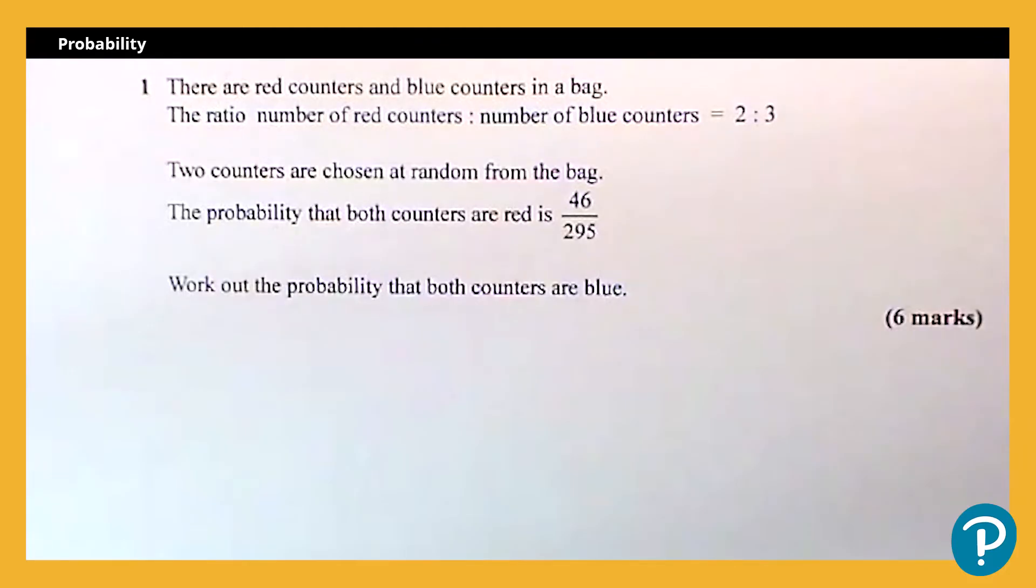Two counters are chosen at random from the bag. The probability that both the counters are red is 46 over 295, and it asks us to work out the probability that both the counters are blue.